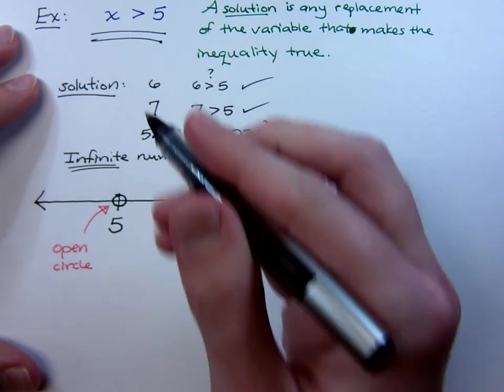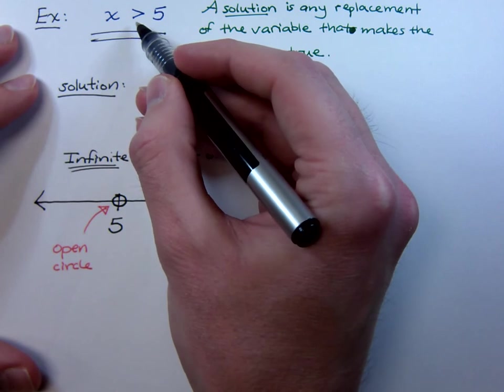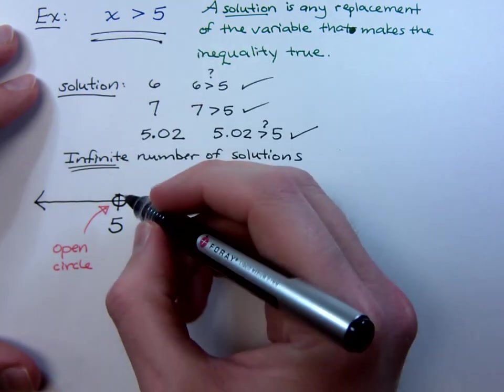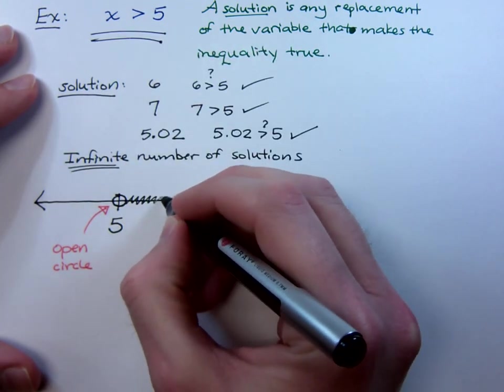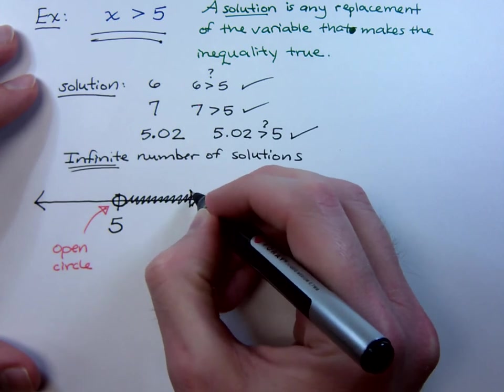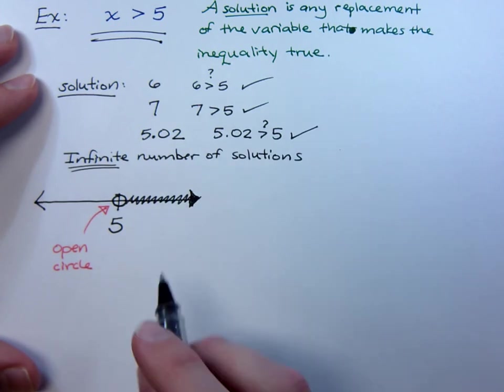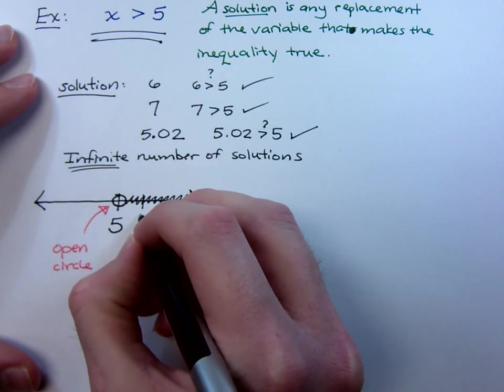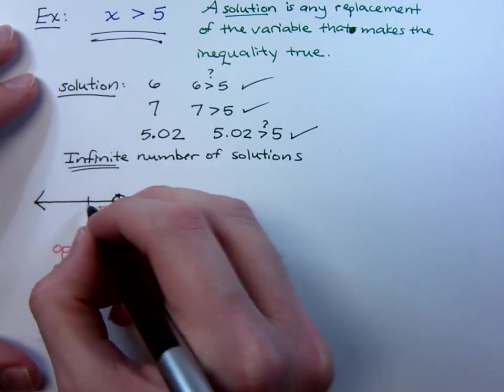And then since this inequality says greater than, the numbers that are greater than 5 would be those obviously out here to the right. That's where the numbers get larger because there is a natural ordering to the number line. You know if you go out to the right, you would have numbers like 6 and so on.